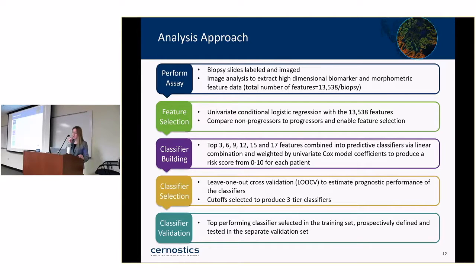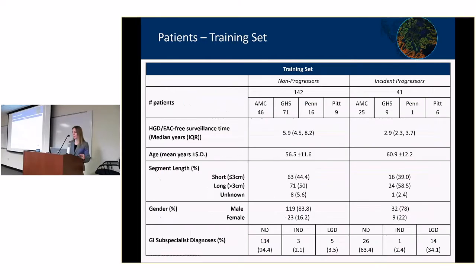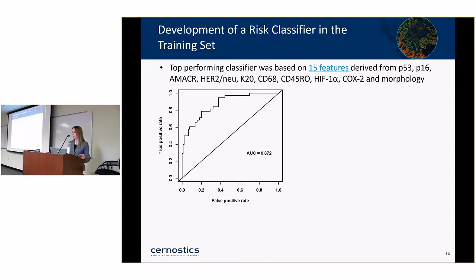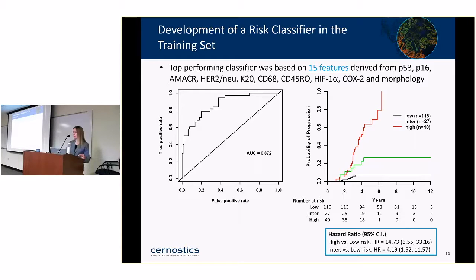The top-performing classifier was selected in the training set and then prospectively defined and tested in the separate validation set, which was quarantined during training. In the training set there were 41 incident progressors and 142 non-progressors from four institutions, matched where possible for age, segment length, and gender. The classifier was based on 15 features derived from nine biomarkers and morphology, with an area under the ROC of 0.87. Kaplan-Meier analysis showed patients scored high risk were 14.7 times more likely to progress to high-grade dysplasia or cancer within five years compared to low-risk patients.